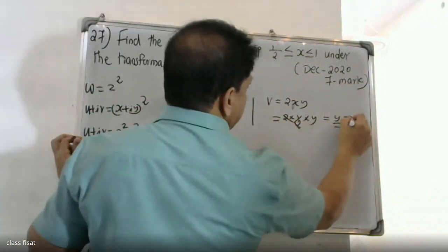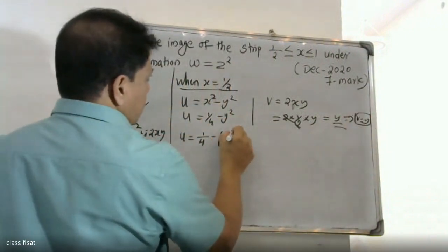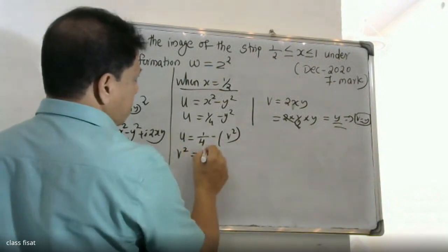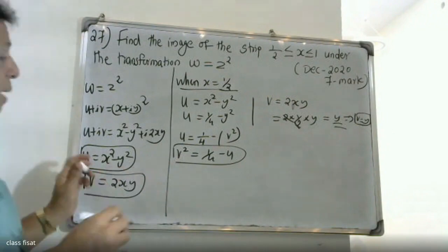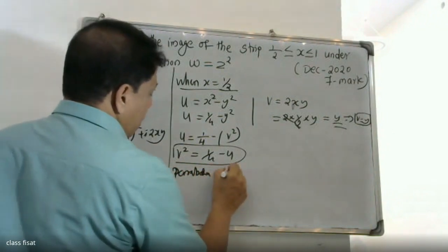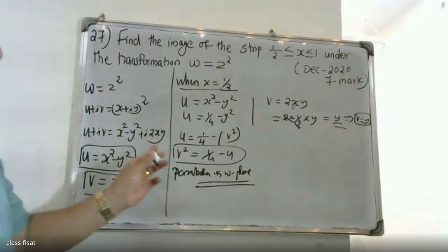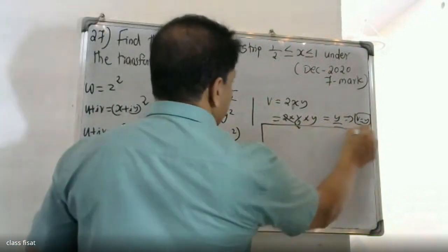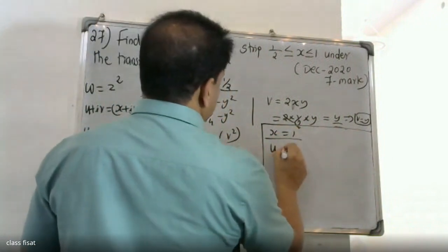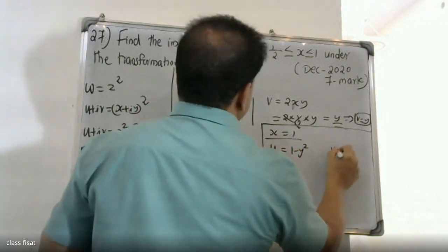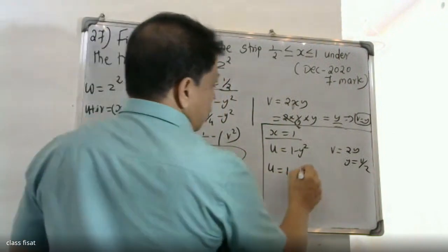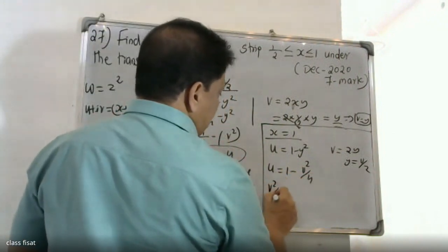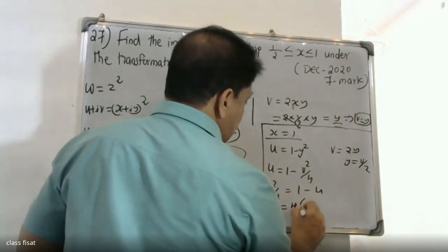For x = 1/2: v = 2(1/2)y = y, so y = v. Then u = 1/4 - y², which gives v² = 1/4 - u. This is a parabola. For the second case, x = 1: u = 1 - y², v = 2y, so y = v/2. Then v²/4 = 1 - u, giving v² = 4(1 - u). This is another parabola.